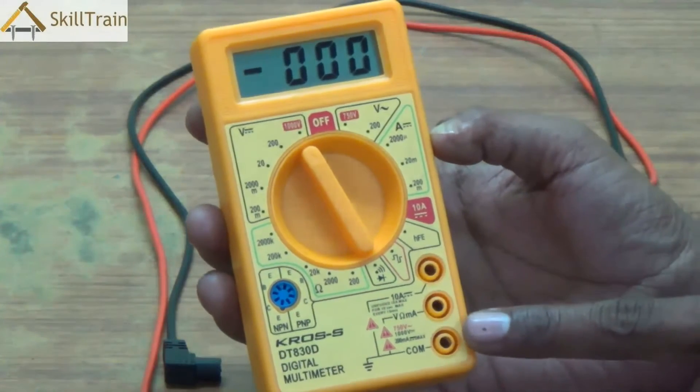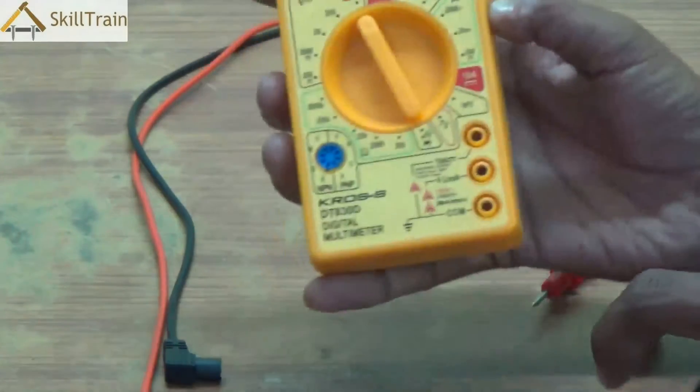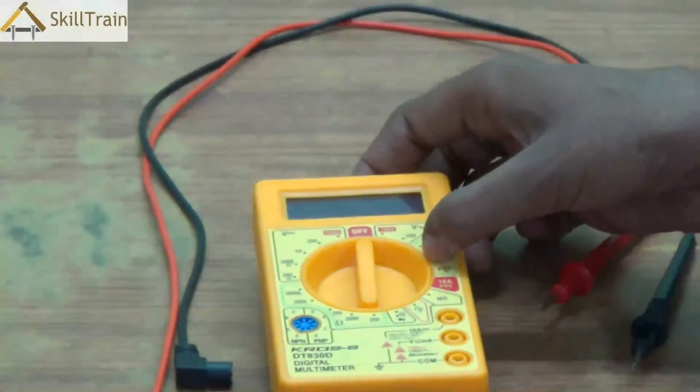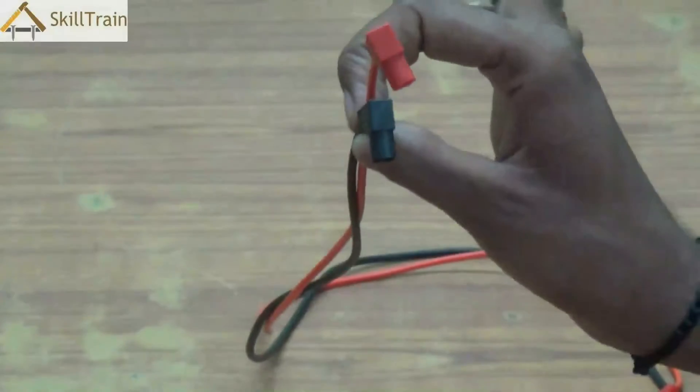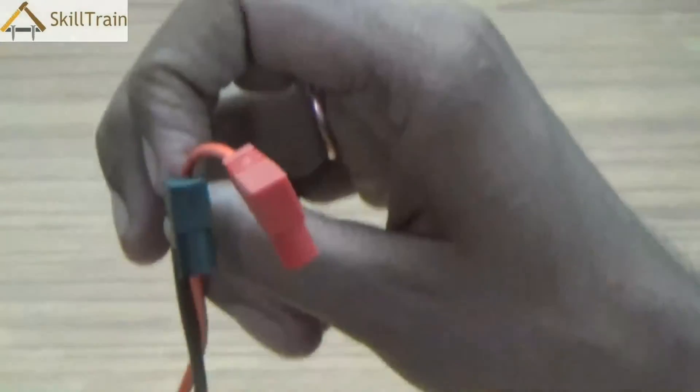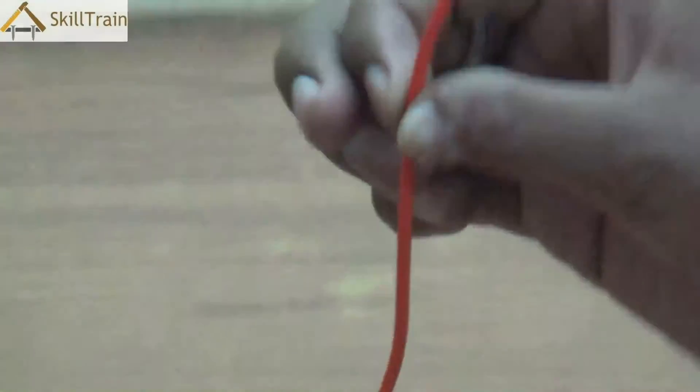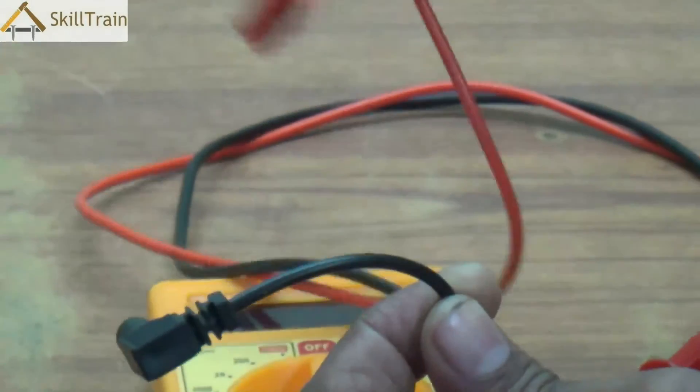Let's understand how we can use this and what are the safety features that you need to keep in mind. First of all, you need to understand what probes are. As you can see, there are two probes which are commonly used with all multimeters. The first one is a black colored one. The second one is a red colored one. And these two probes have very specific positions where you need to place them on the multimeter.